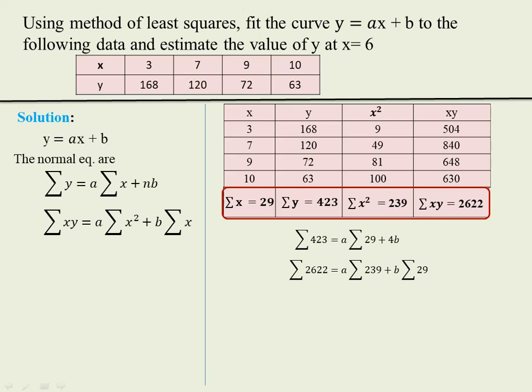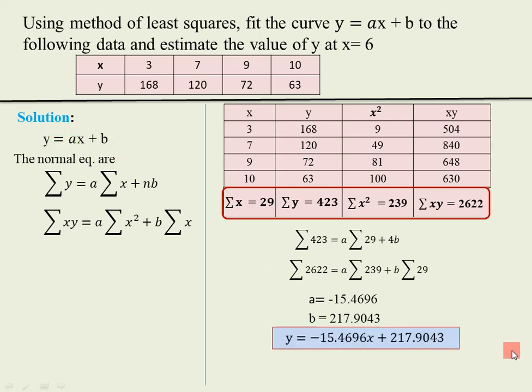You may use Cramer's rule, Gauss elimination method, or Gauss-Seidel method to get the solution. By solving, we get a is equal to minus 15.4696 and b is equal to 217.9043. We then put the values of a and b into the equation y is equal to ax plus b.